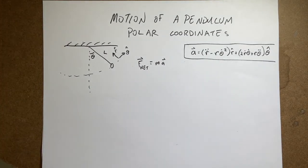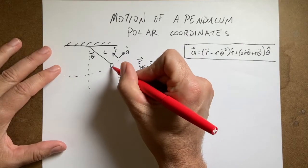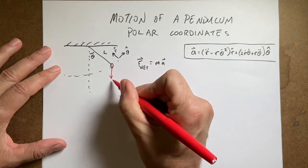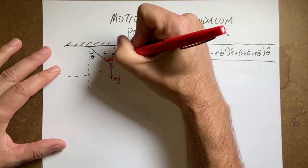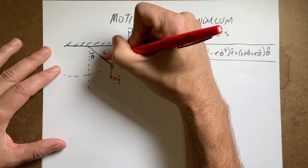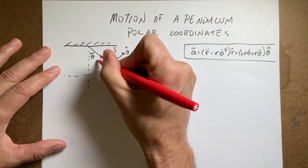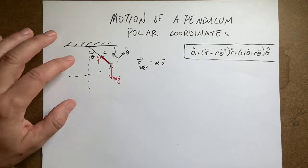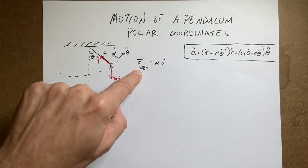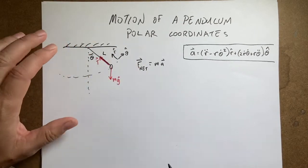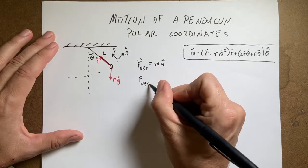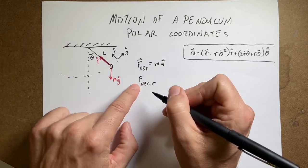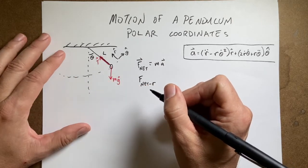You might wonder why we'd use polar coordinates if that makes things complicated. But here's why it's still worth it. The forces on this mass are the gravitational force mg, and the tension T. Let's break the net force into the r component and the theta component. So F net in the r direction — it's a scalar now — what forces are in the r direction?